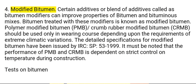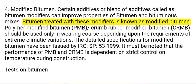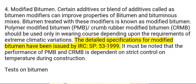4. Modified Bitumen. Certain additives or blend of additives called bitumen modifiers can improve properties of bitumen and bituminous mixes. Bitumen treated with these modifiers is known as modified bitumen. Polymer modified bitumen (PMB) and crumb rubber modified bitumen (CRMB) should be used only in wearing course depending upon the requirements of extreme climatic variations. The detailed specifications for modified bitumen have been issued by IRC SP 53-1999. The performance of PMB and CRMB is dependent on strict control on temperature during construction.